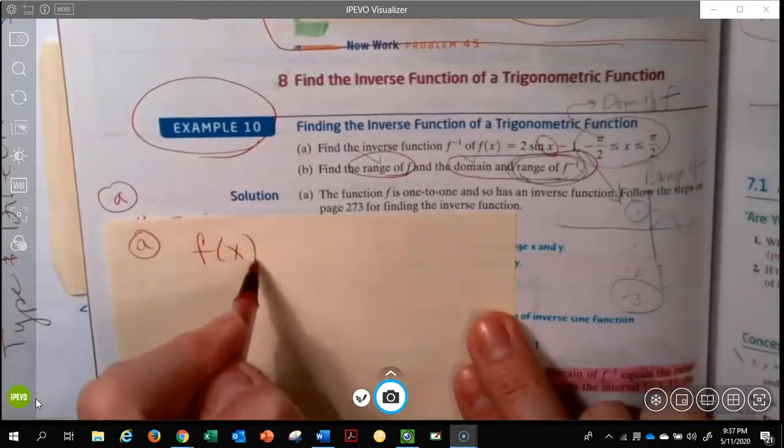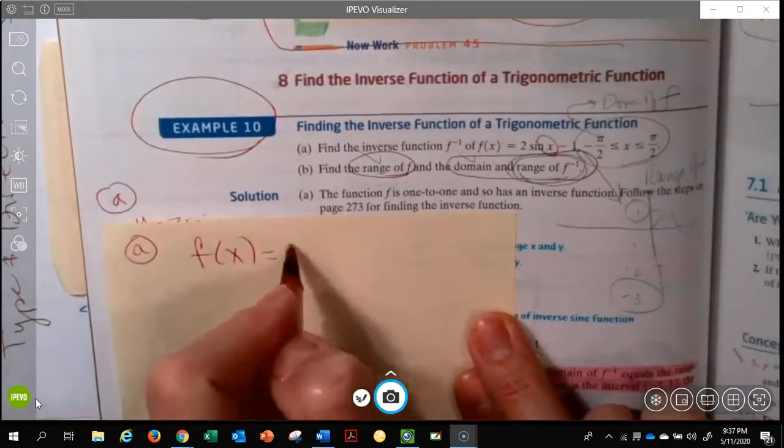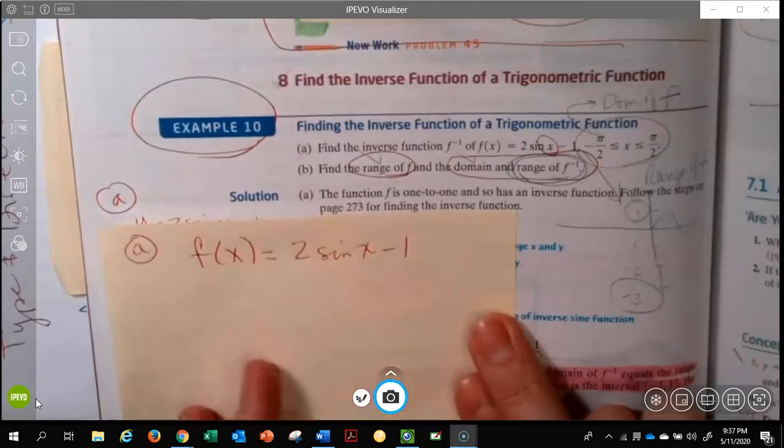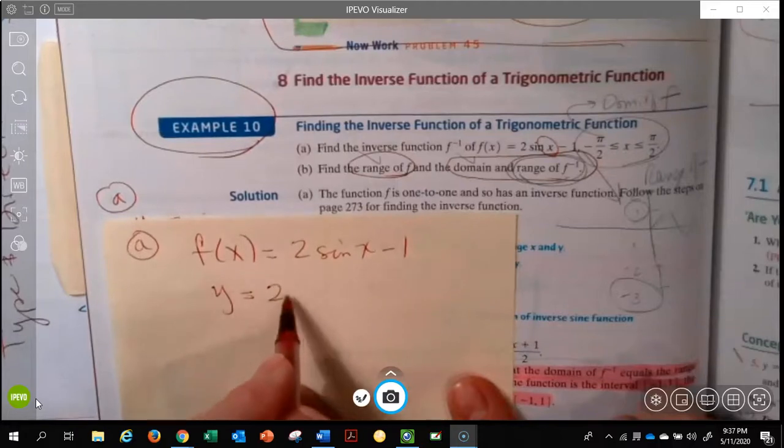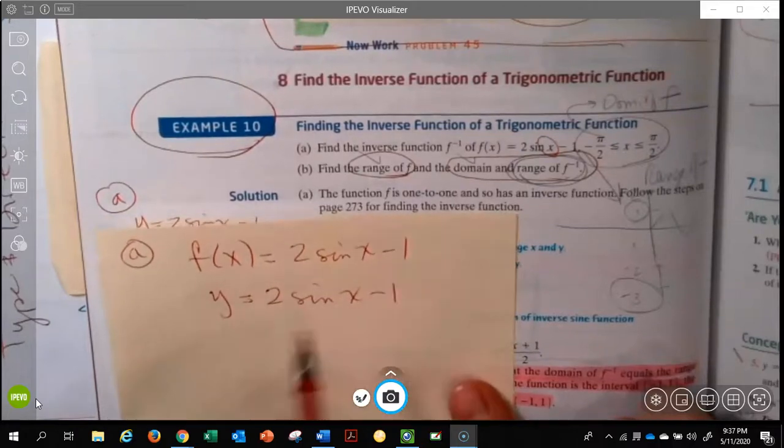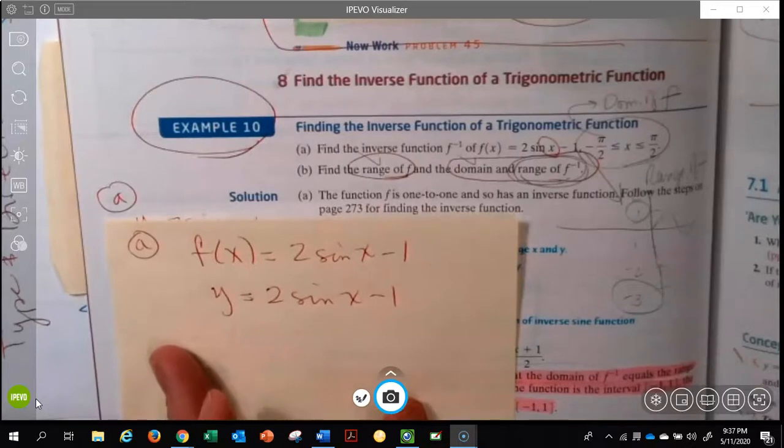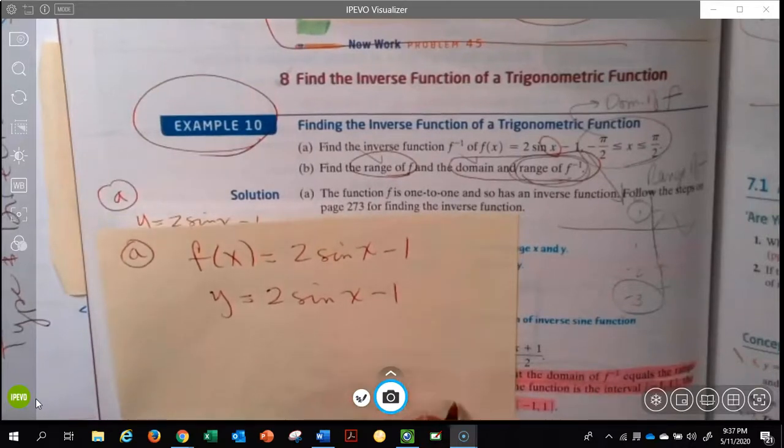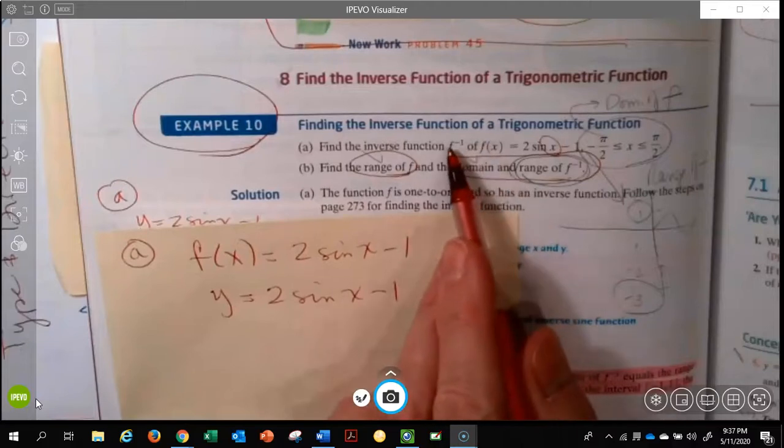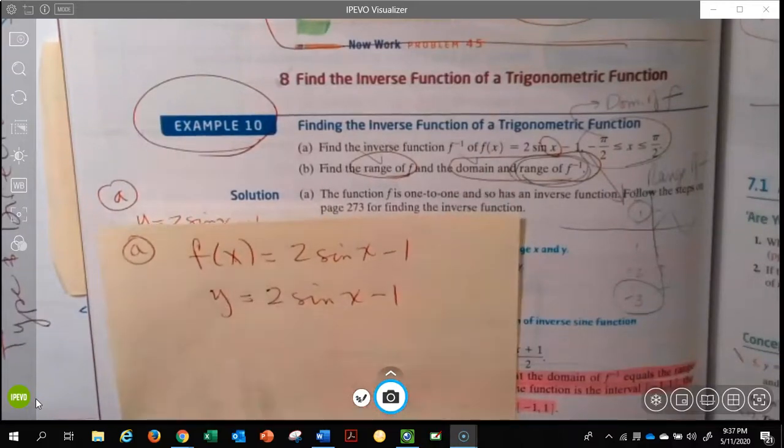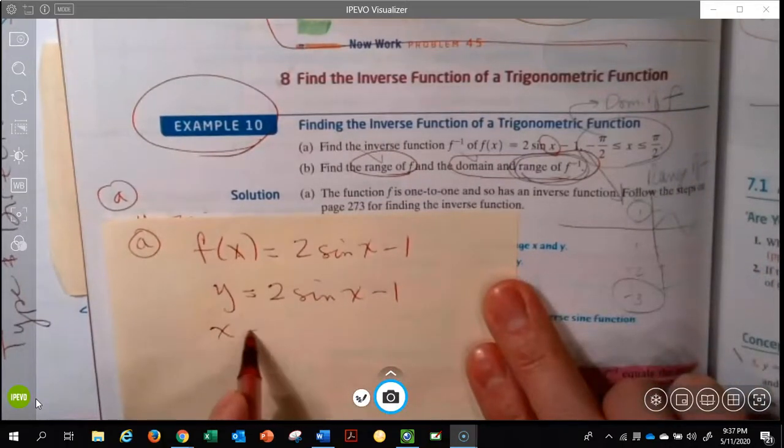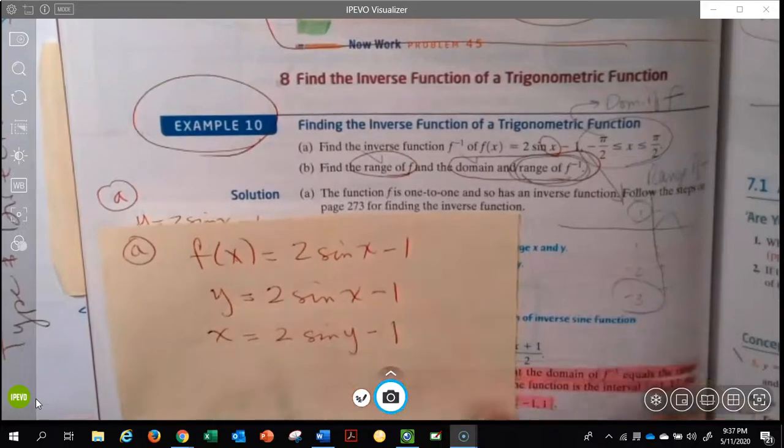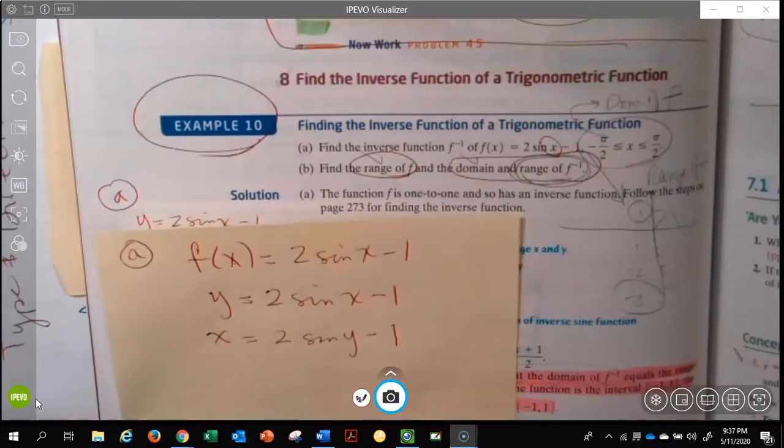Starting with our f of x is 2 sine of x minus 1, step number one was to take our f of x and replace it with y. There's step number one. So what you're doing is you're mentally noting or putting some notes to yourself on the side of how can I convert a function to its inverse. First thing, f of x, we write as y. Second thing, we interchange the x and the y, so the y becomes the x, and the x becomes the y.